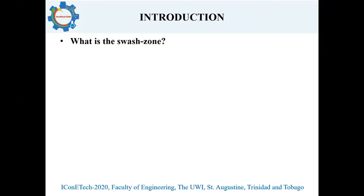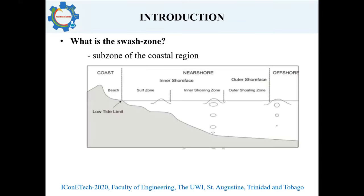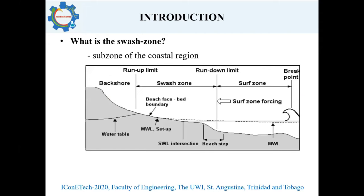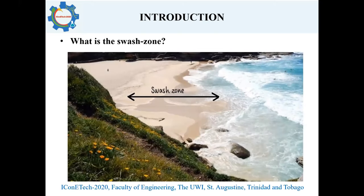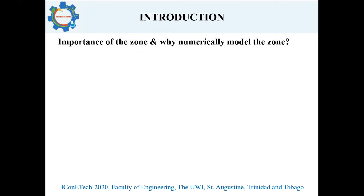Before I get into the details of the research, I need to outline what exactly is the Swash Zone. It is nothing more than a subzone of the coastal region, located at the boundary between the land and the sea. More specifically, it is the region of the beach bounded between the maximum run-up and run-down limits of waves — the region periodically exposed to the atmosphere due to wave oscillations. This image shows what the zone looks like in a real-life setting.